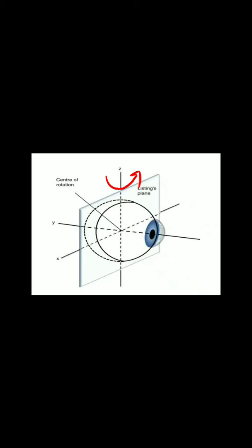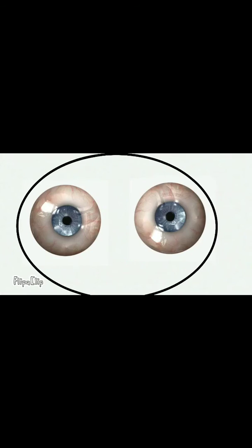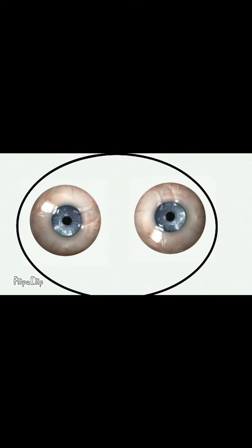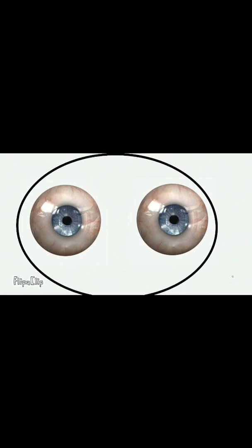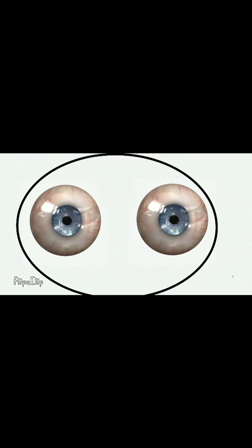When the eyeball is moving inside towards the nose, that is called adduction. Whereas when the eyeball moves outside to the exterior, it is called abduction. The rotation of the eye towards the nose is called intorsion. Observe in the video how the eyes are intorting: first the right eye is intorting and then the left eye is intorting.